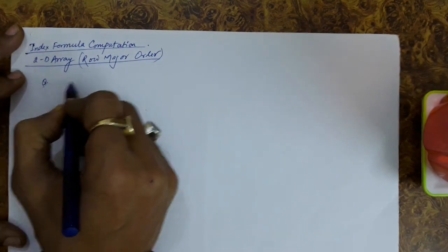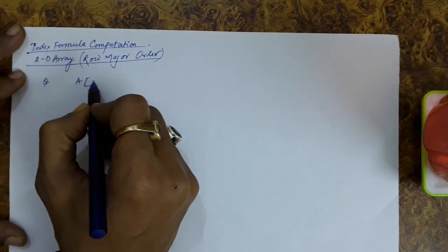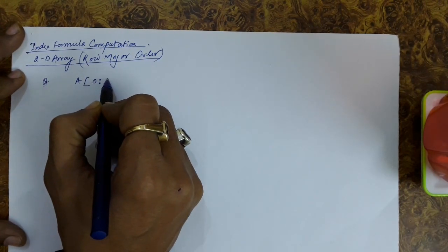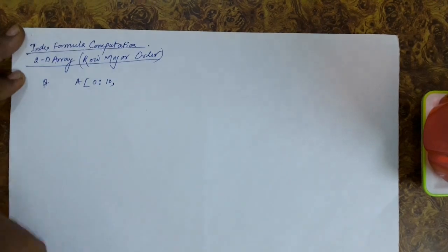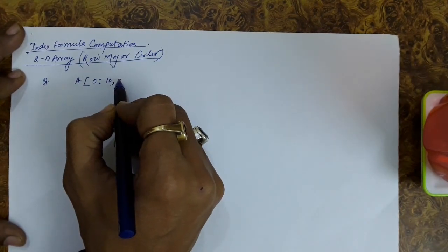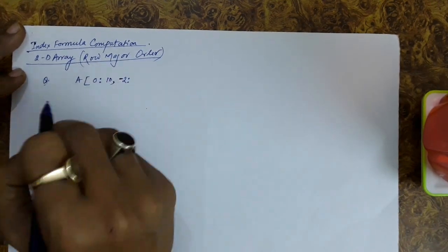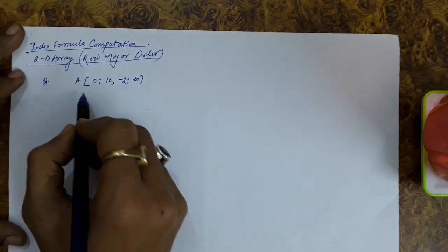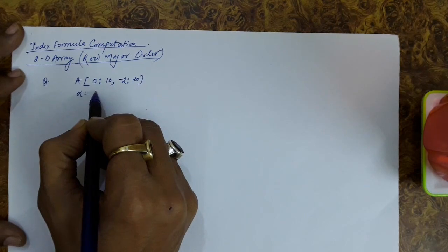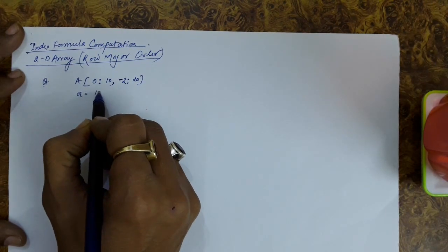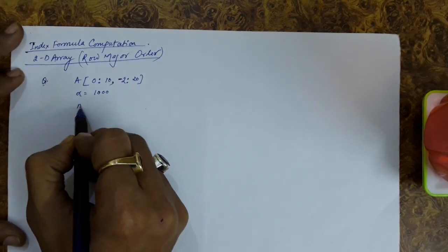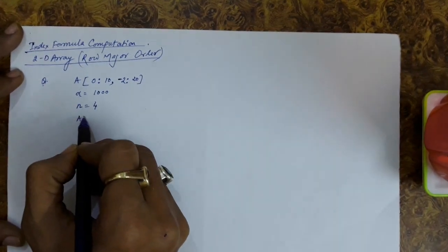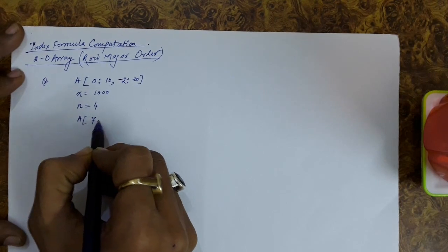Let's take a question wherein there is an array where the first index starts at 0, last index is 10, and for the column side the first index is minus 2 and last index is 20. The address of the first element is 1000, every element requires 4 bytes for storage, and we are interested in finding the address of element a[7][9].